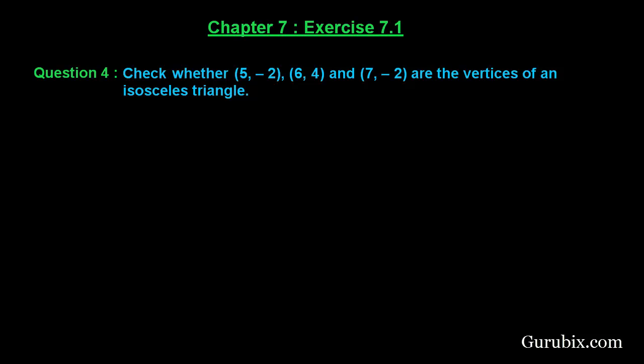Welcome friends, let us solve question number 4 of exercise 7.1 of chapter 7. The question says check whether the given points (5, -2), (6, 4), and (7, -2) are the vertices of an isosceles triangle. Let us solve the question.